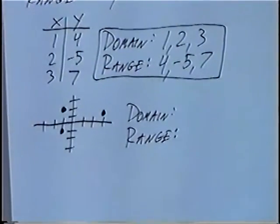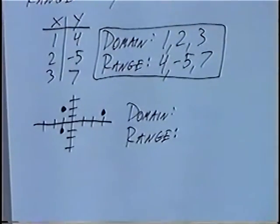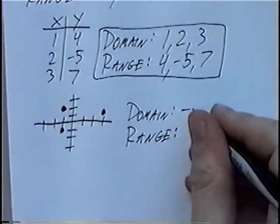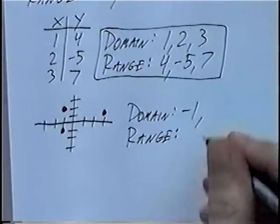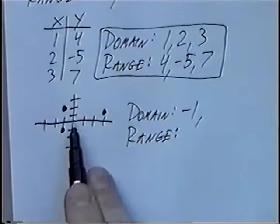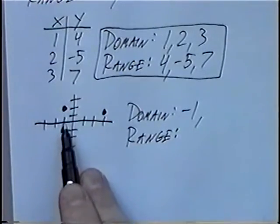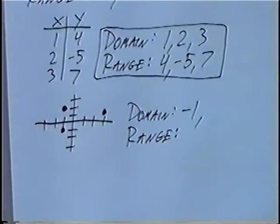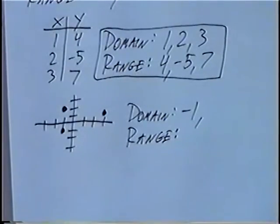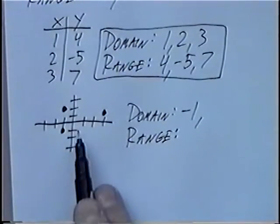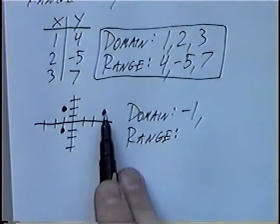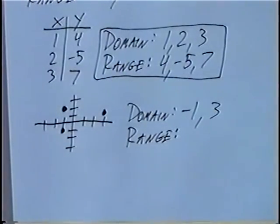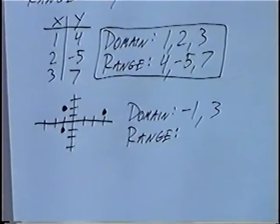The domain again is the X-values. Looking at the first point, the X-value was negative 1. The second point, the X-value was also negative 1. Since we have it listed once, we don't have to list negative 1 twice. And the last point's X-value was 3. So the domain would be negative 1 and 3.